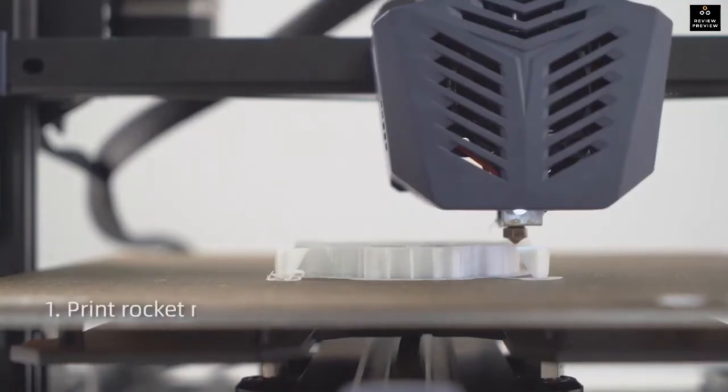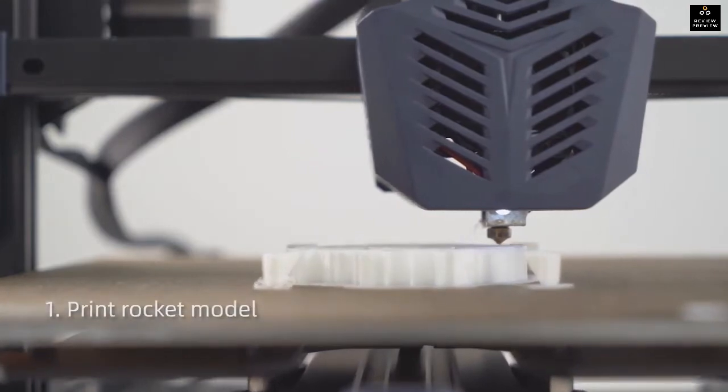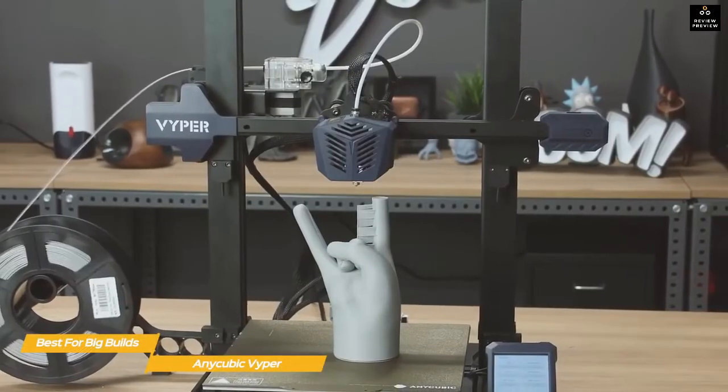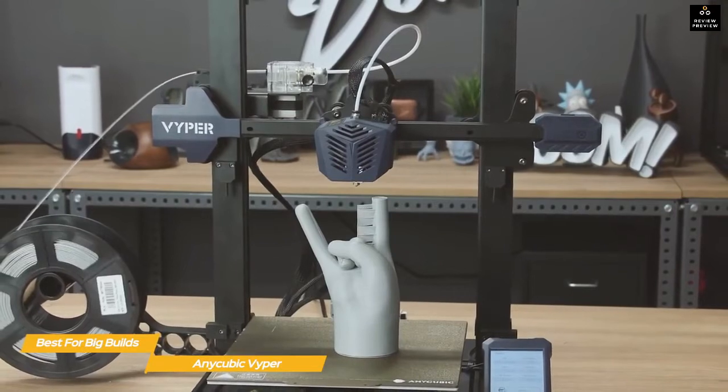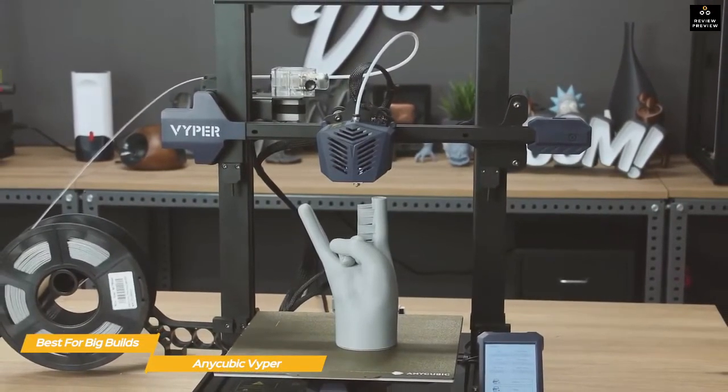And like the Monoprice Mini Delta V2, you're not restricted to use filament from any particular manufacturer. If you have some experience with 3D printing and have been wanting to create some larger 3D prints, the Anycubic Viper is an excellent choice.